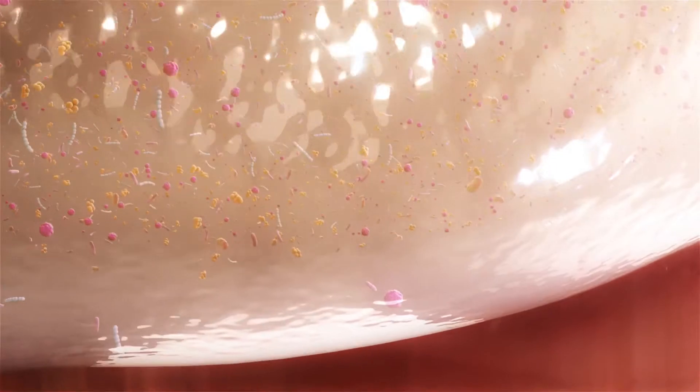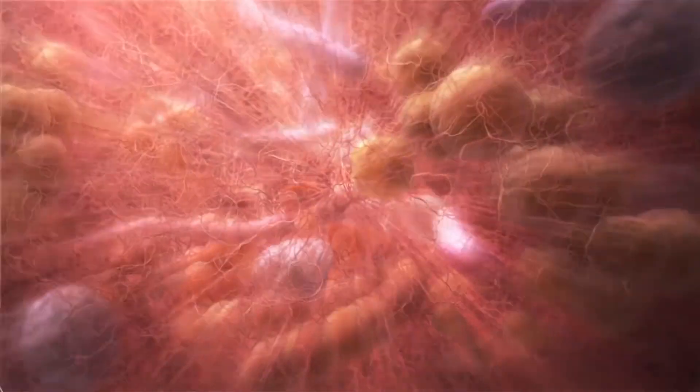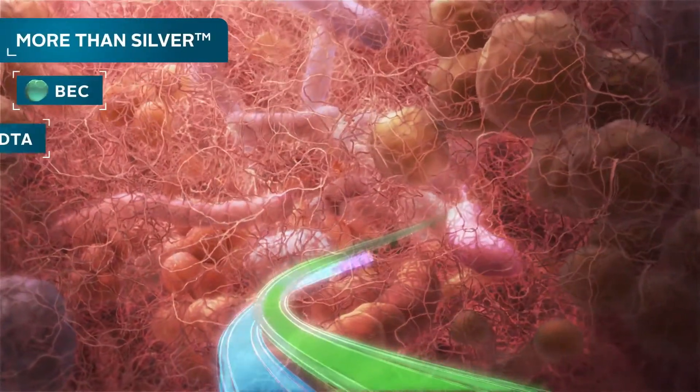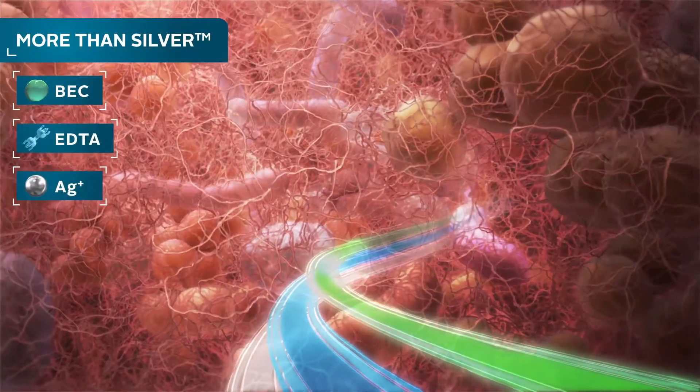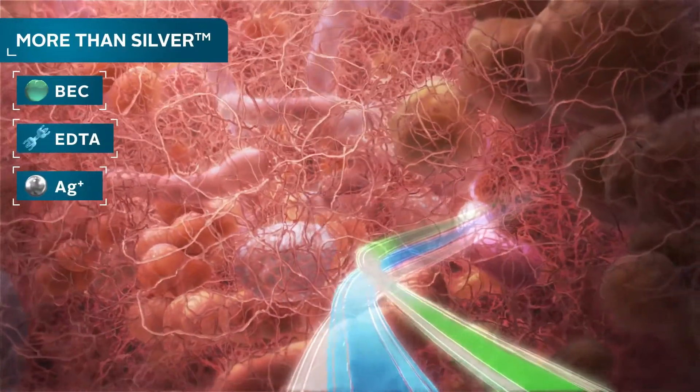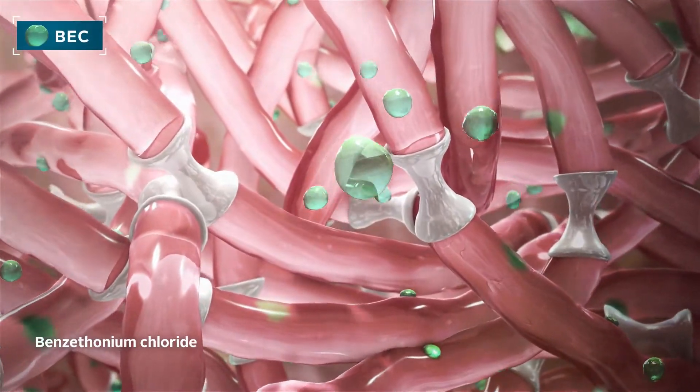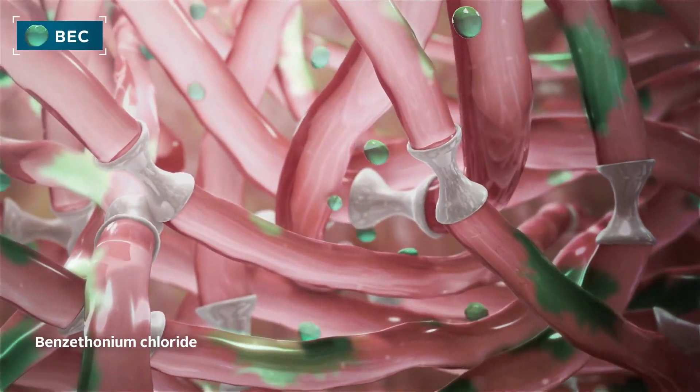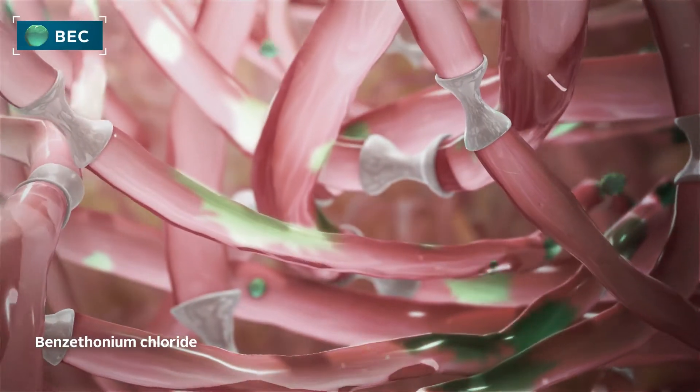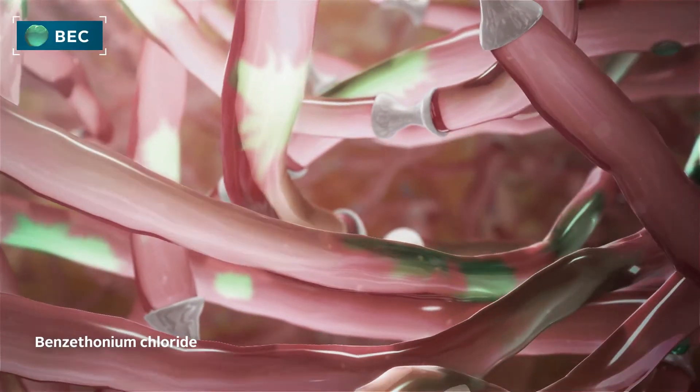Three components within the more than silver technology work synergistically to disrupt and destroy biofilm. BEC is a surfactant that reduces surface tension within biofilm. This action helps the anti-biofilm agents to reach their target faster and more efficiently.